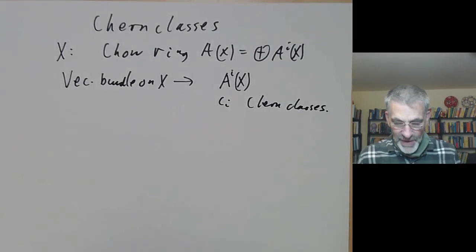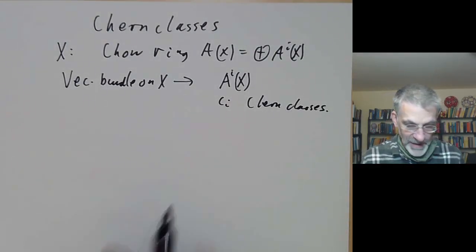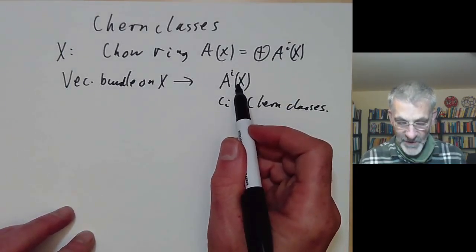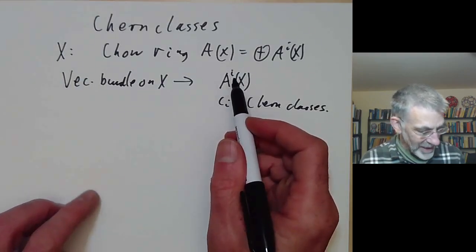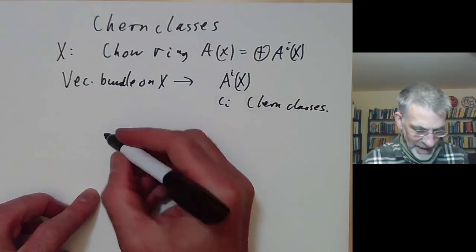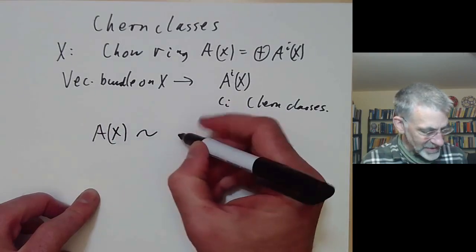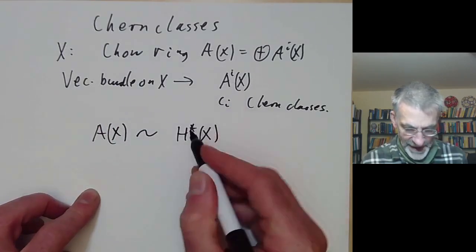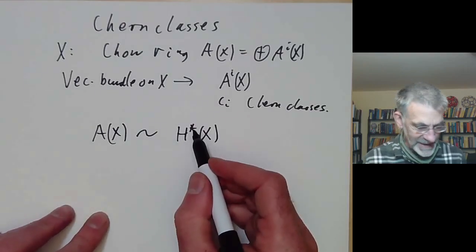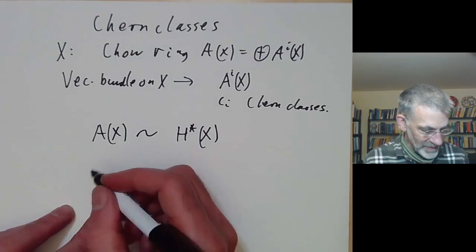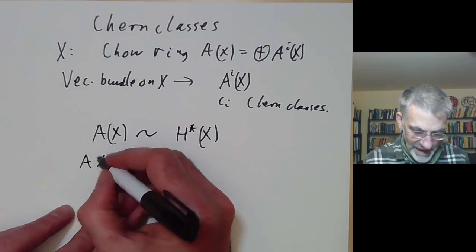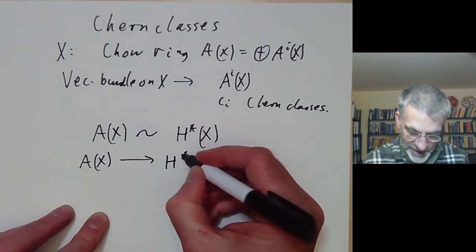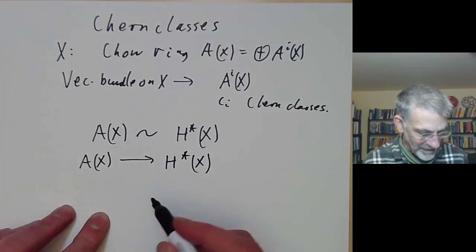Normally in differential geometry we have Chern classes taking values in the cohomology of a complex manifold rather than its Chow ring. It turns out the Chow ring is closely related to the cohomology ring of a variety X. So there is a homomorphism from the Chow ring to cohomology, which can be defined as follows.